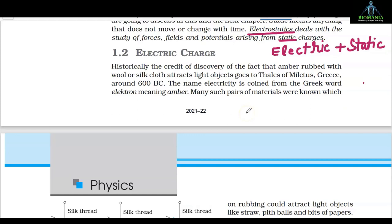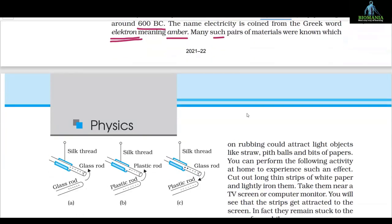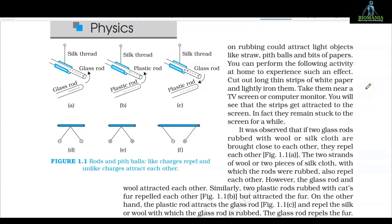So what is actually electric charge? Historically, the credit for the discovery of the fact that amber rubbed with wool or silk attracts light objects goes to Thales of Miletus, Greece, around 600 BC. The name 'electricity' is coined from the Greek word 'electron,' meaning amber. Many such pairs of materials were known which on rubbing could attract light objects like straw, pit balls, and bits of paper.